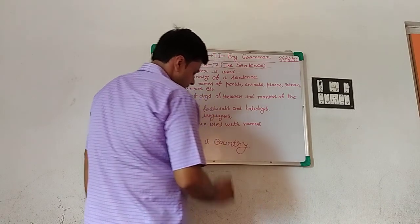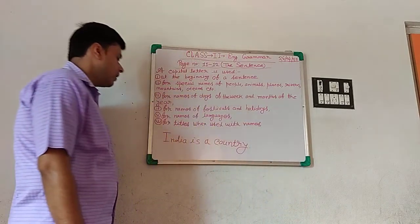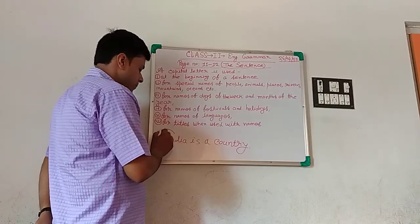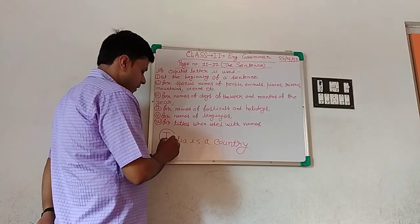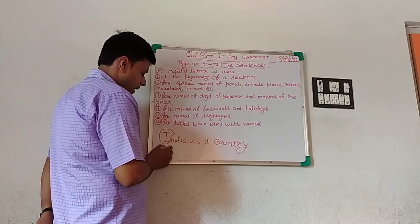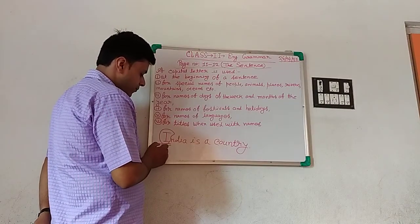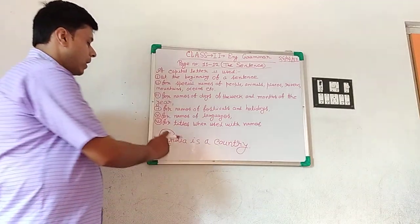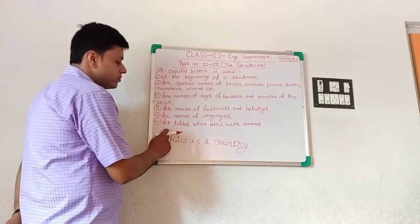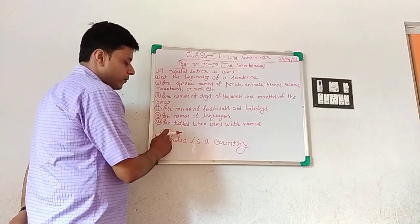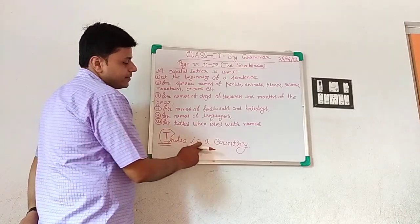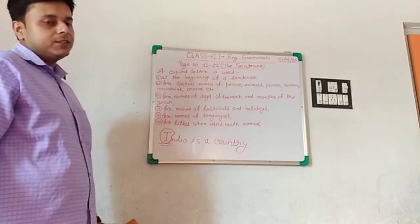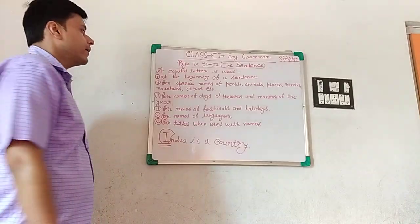In the beginning of the sentence, the word is 'India' and 'I' is the first letter of the word India. So we use a capital letter for 'I'. India is a country. Is that clear? This is the first point.